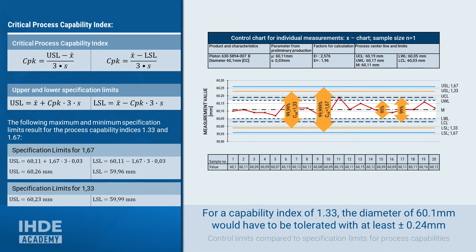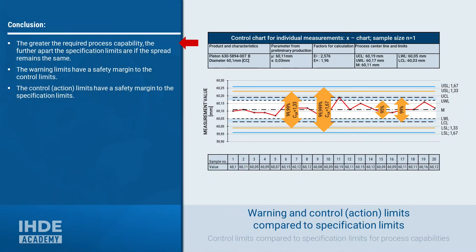The same applies to a process capability index of 1.33 instead of 1.67. Due to the lower requirement, the specification limits can be narrowed. For a process capability index of 1.33, values of 60.23 and 59.99 mm are obtained for the upper and lower specification limits. This would mean there is a 99.99% probability that all piston diameters will be within the specification limits. In conclusion, the greater the required process capability, the further apart the specification limits are if the spread remains the same. The warning limits have a safety margin to the control limits, and the control limits have a safety margin to the specification limits.